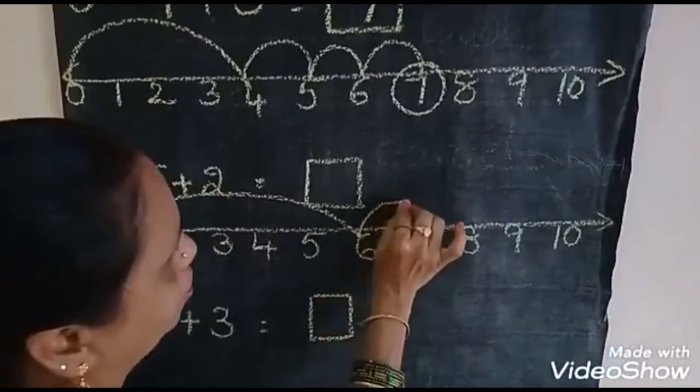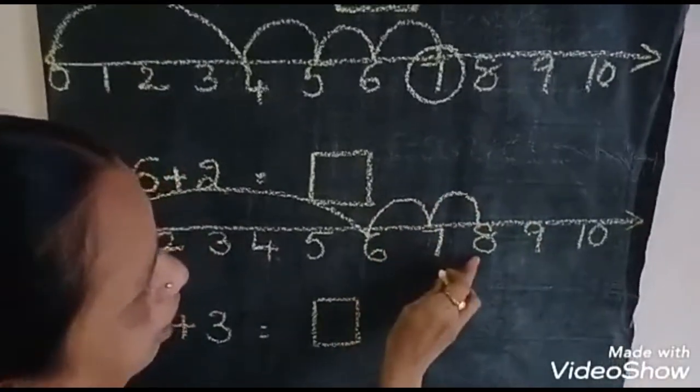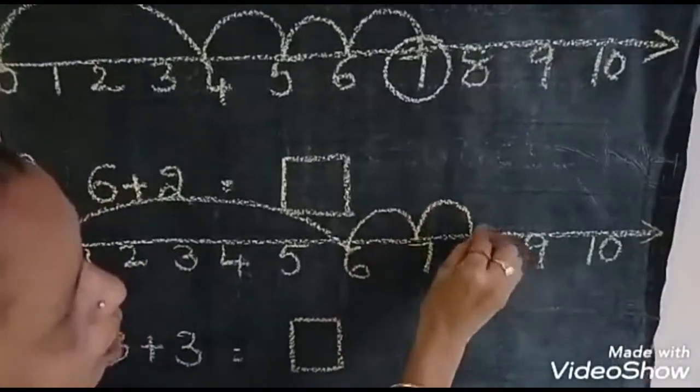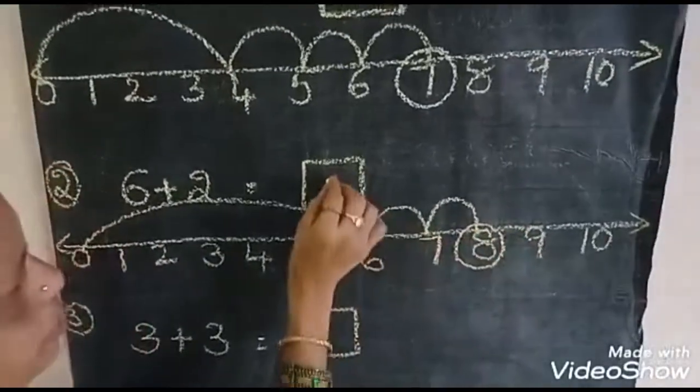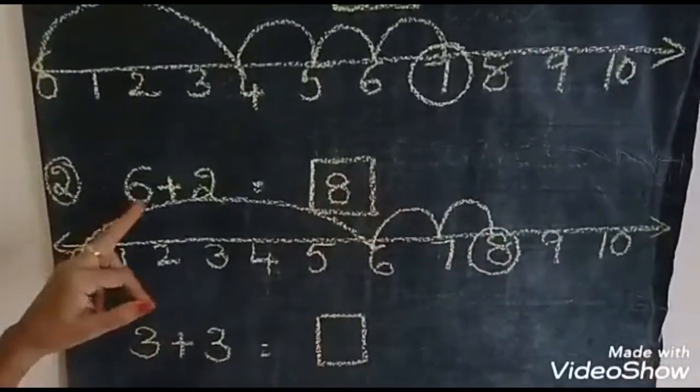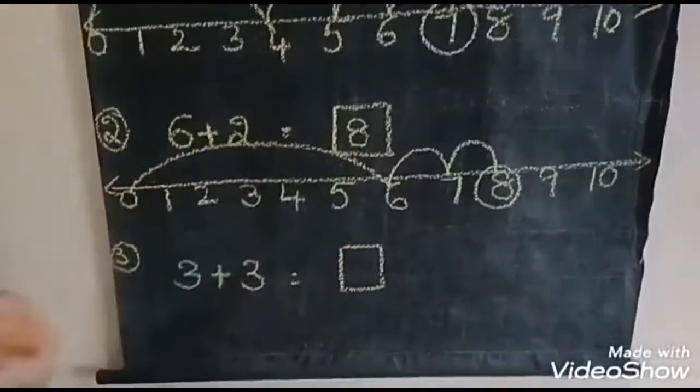So, skip. 1, 2. See. 1, 2. So, answer is 8. So, answer is 8. 6 plus 2 is equal to 8.